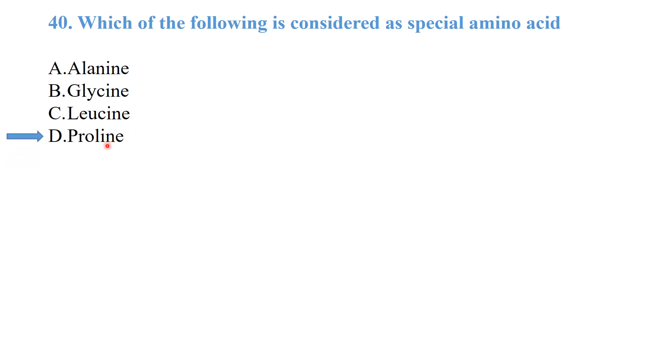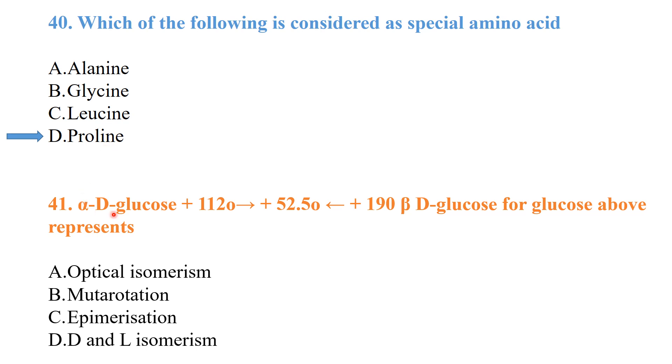Alpha-D-glucose plus 150 degrees will produce plus 52.5 degrees and 19 degrees beta-D-glucose. This represents a type of isomerism, specifically in which the molecules rearrange themselves in solution. This is called mutarotation.